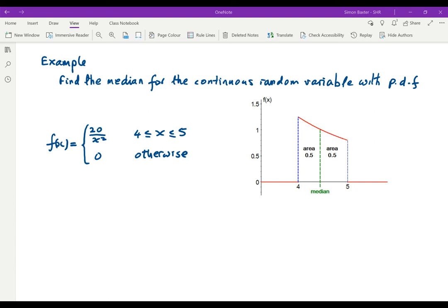So if we're going to find it, we are looking for the probability that x is less than Q₂ is a half. That is the same as saying the integral of 20/x² dx from the lowest value, which is 4, up to Q₂ is 0.5.